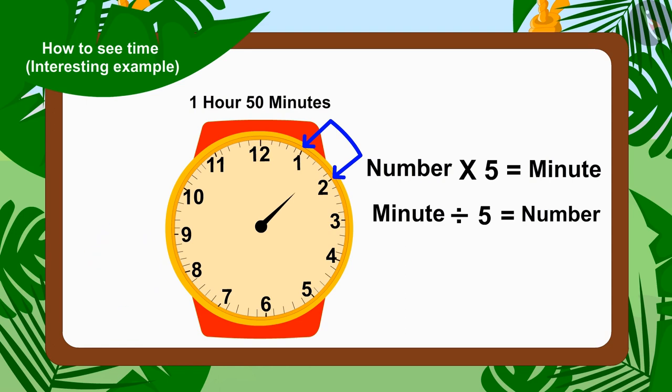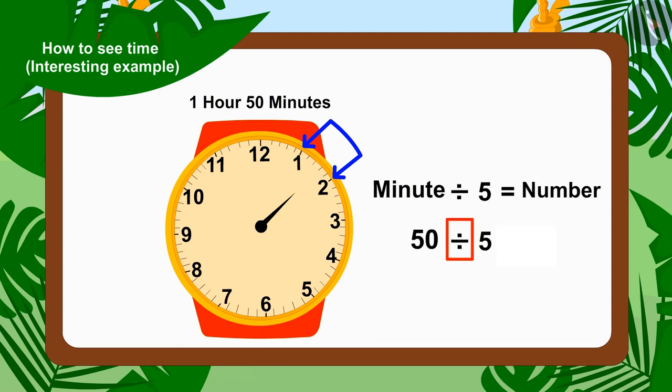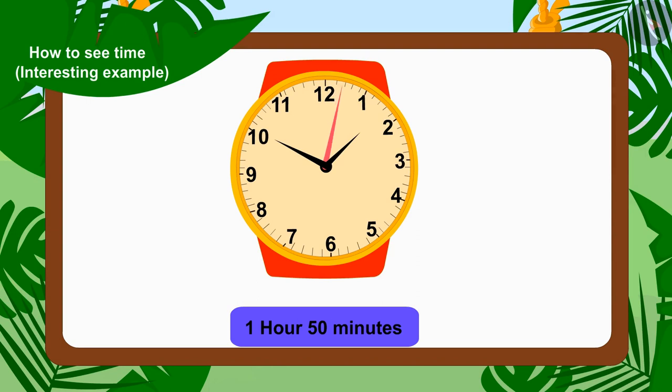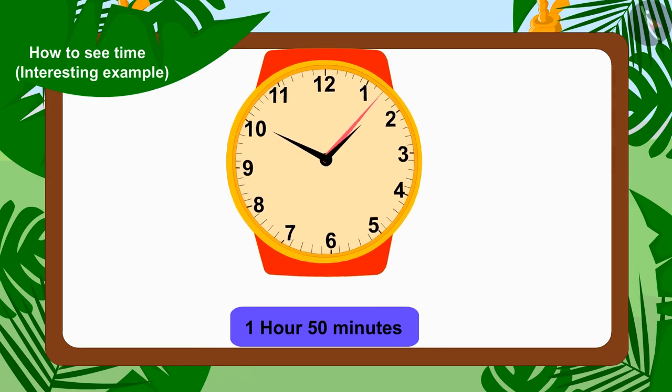To find out what number the needle points to, we have to reverse it. That is, minutes divided by five. So fifty divided by five, how many does that make? Exactly ten. Therefore the minute needle will be on the number ten. In this way we can show one hour fifty minutes.